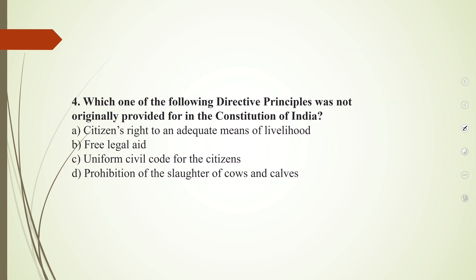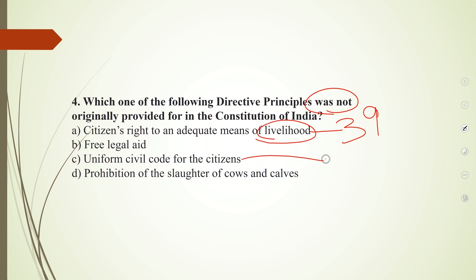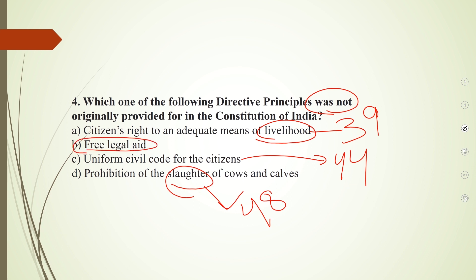The fourth question is: which one of the following DPSPs was not originally provided in the Constitution? Citizens' right to an adequate means of livelihood was originally provided under Article 39. Uniform civil code for citizens was provided under Article 44 from the start. Prohibition of slaughter of cows was also there from the beginning under Article 48. However, free legal aid was added later under Article 39A — it was not originally provided. So the correct answer is B.